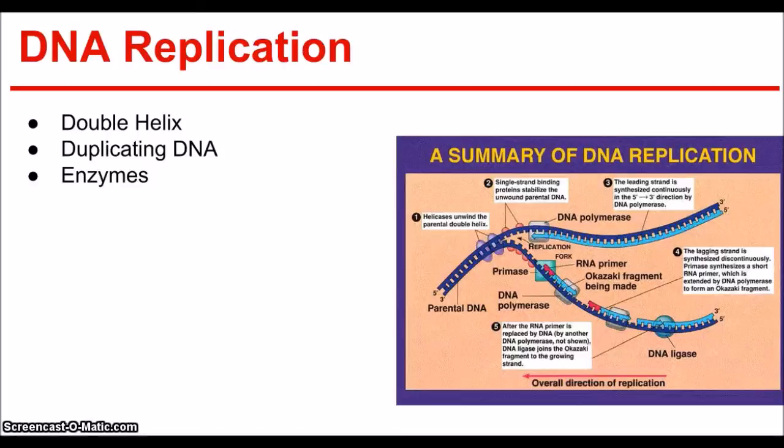In eukaryotes, DNA replication occurs at hundreds of different places. Duplicating DNA: Replication proceeds in both directions until each chromosome is completely copied. Replication is the process of duplicating DNA, ensuring that each resulting cell will have a complete set of DNA molecules.